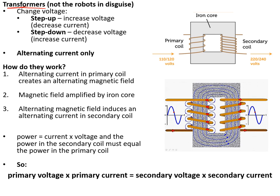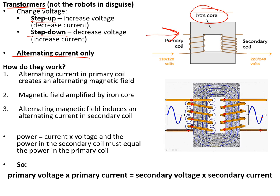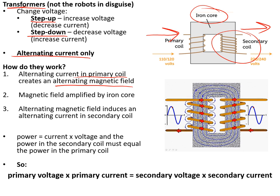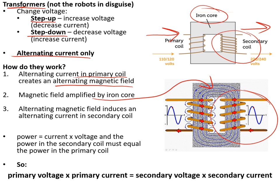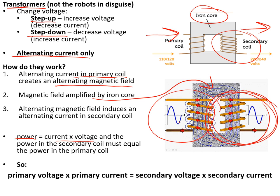Transformers change the voltage of alternating current only. Step-up transformers increase the voltage; step-down transformers decrease it. Electricity enters the primary coil, which is wrapped around an iron core; current comes out of the secondary coil at a different voltage. The alternating current in the primary coil creates an alternating magnetic field; the iron core amplifies it, and that field induces an alternating current in the secondary coil. Since power = current × voltage must be conserved: primary voltage × primary current = secondary voltage × secondary current.